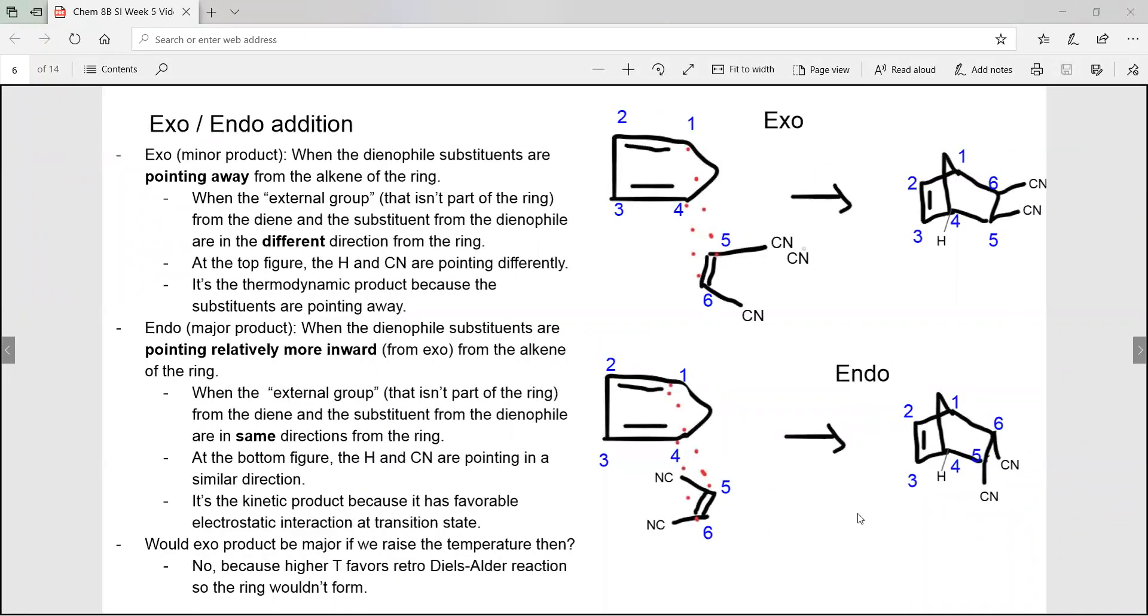The Diels-Alder reaction can also have exo or endo addition. The exo product is when the dienophile substituents are pointing away from the alkene of the ring. Another way to look at it is if the external group from the diene that isn't part of the ring and the substituents from the dienophile are pointing into different directions, then it's exo addition.